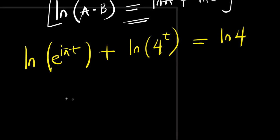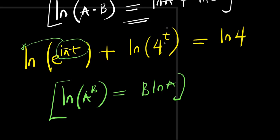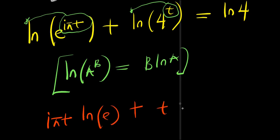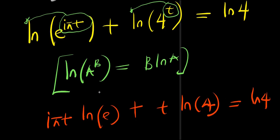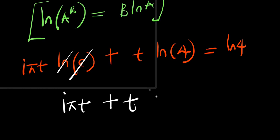And also recall that natural log of a to the power b equals b times natural log of a. So the i·pi·t comes in front and the t comes in front of the second term. That means I have i·pi·t times natural log of e plus t times natural log of 4 equals natural log of 4. Since natural log of e equals 1, this simplifies to i·pi·t plus t times natural log of 4 equals natural log of 4.